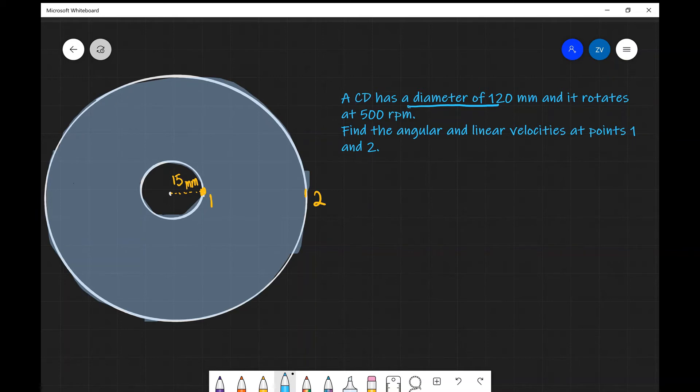Now what this means is that the CD does 500 complete revolutions in 60 seconds. Find the angular and linear velocities at points 1 and 2. This will be a perfect opportunity for you guys to pause this question and attempt this independently.